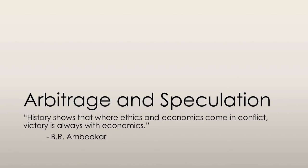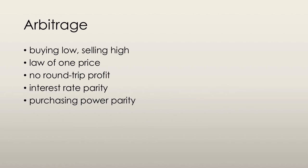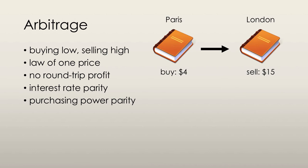Let's move on and discuss arbitrage and speculation. Arbitrage is the age-old saying of buying low and selling high. It's the practice of seeking profit by buying in one market and selling for a higher price in another related market. For example, you can buy a book in Paris for $4 and sell that same book in London for $15. You've made a profit.